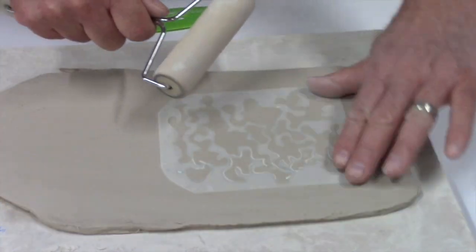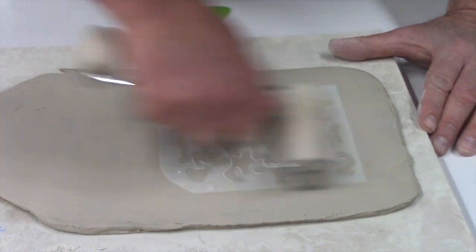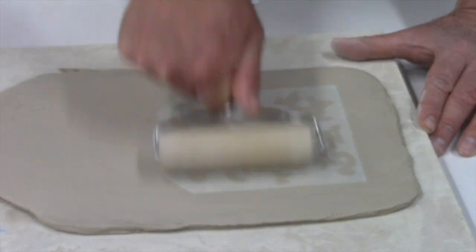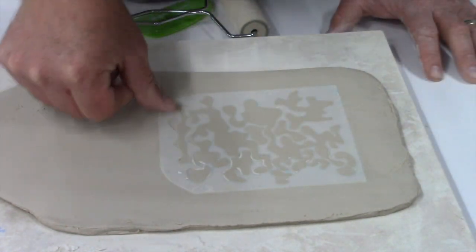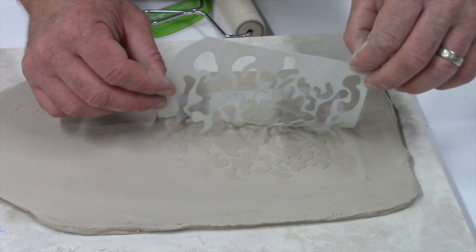We smoothed it out with our fingers first and now we're going to use a pony roller to go over the center of the stencil more than the edges. When you press down, the edges are going to leave a little bit of an indentation which we don't want. You don't want a hard edge on there.